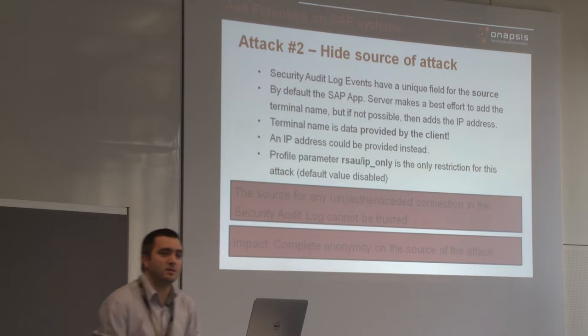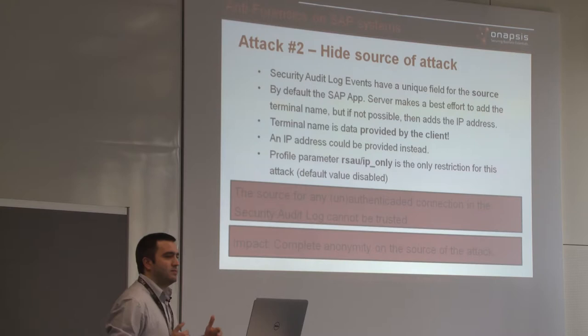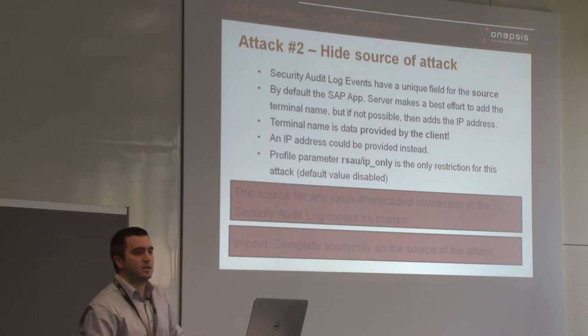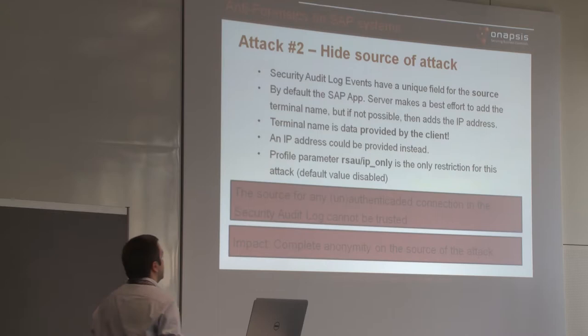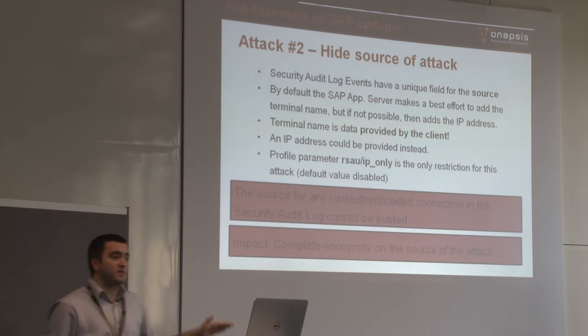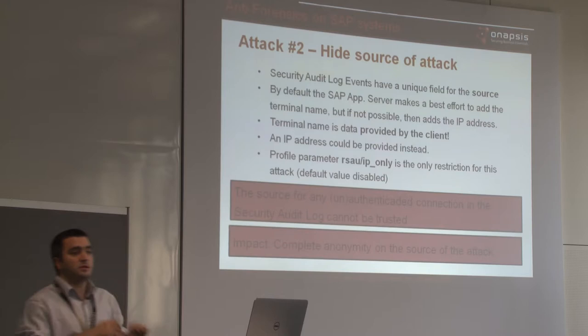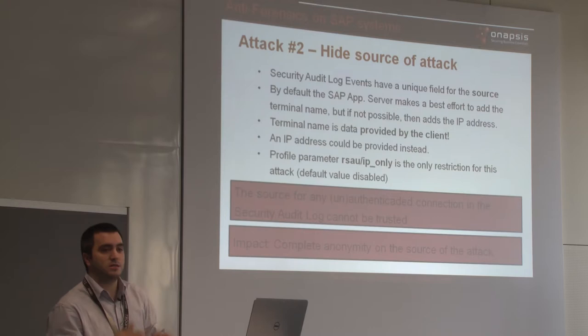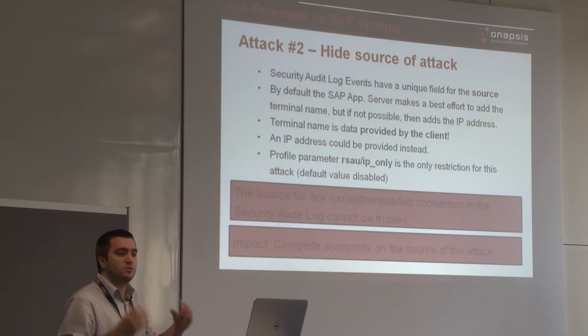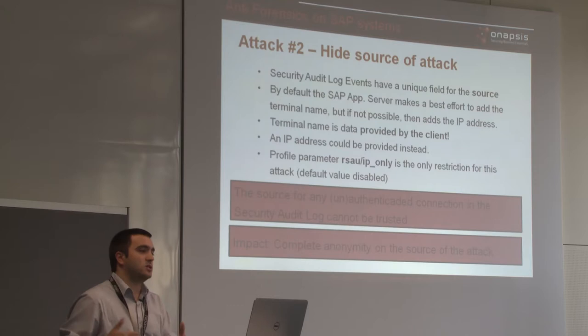There is no way to identify if the IP address was taken from the actual source of the connection or from data provided by the user. This means the source of any connection in the security log — not just unauthenticated, but authenticated as well — cannot be trusted. Even a remote unauthenticated connection attempt, like a brute force, can use this to mask its source. The impact is complete anonymity on the source of the attack.